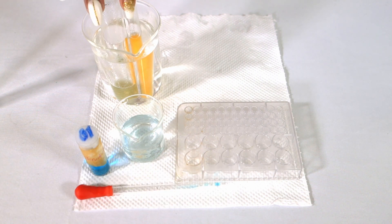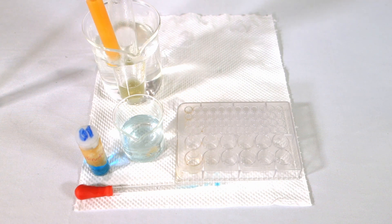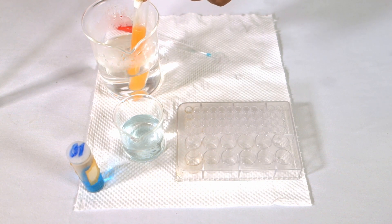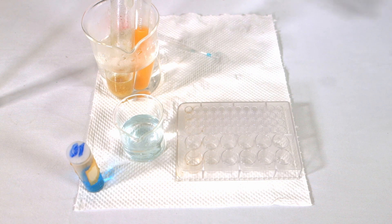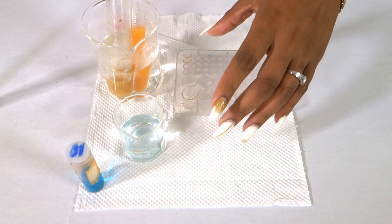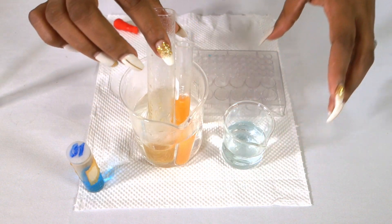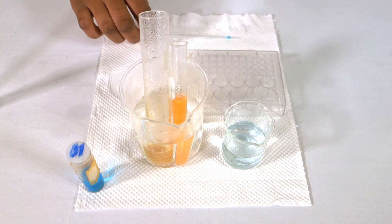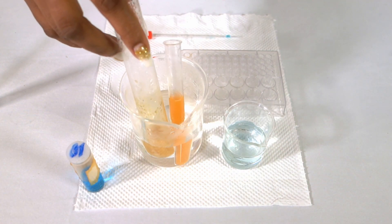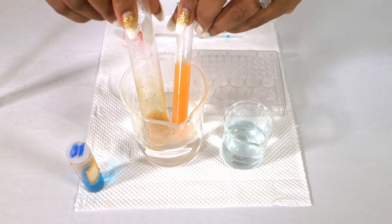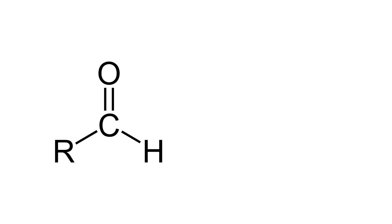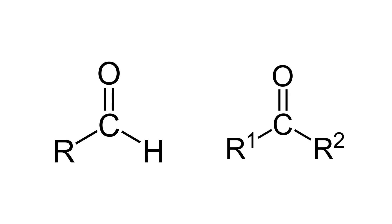The reaction between Benedict's solution and reducing sugars is actually a redox reaction, where the Benedict's solution acts as the oxidizing agent while the reducing sugars are reducing agents. The reduction process causes Benedict's reagent to change color due to the copper 2+ ions being reduced to copper+. Reducing sugars have free aldehyde or ketone functional groups. The key difference is that aldehyde groups only have one R-group and a hydrogen, while the ketone will have two R-groups.